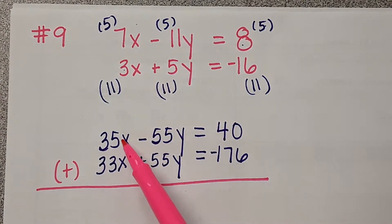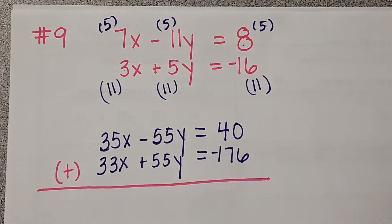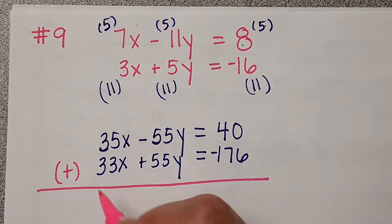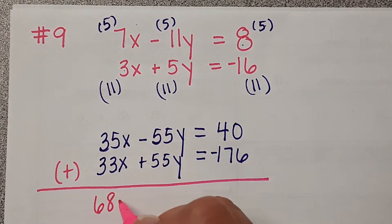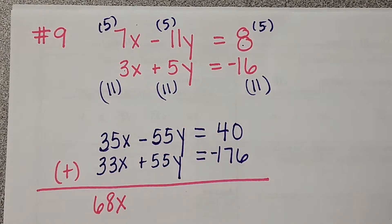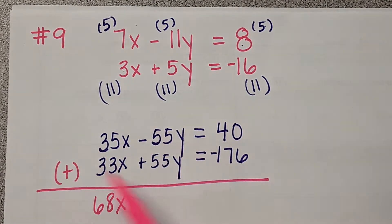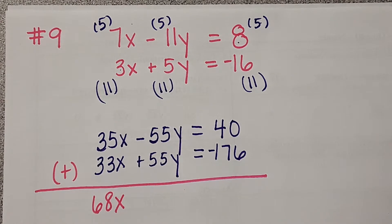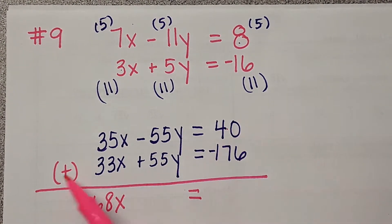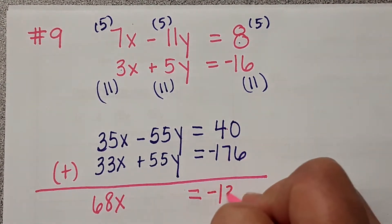So what is 35x plus 33x? 68x. Negative 55y plus 55y equals 40 plus negative 176. Negative 136.